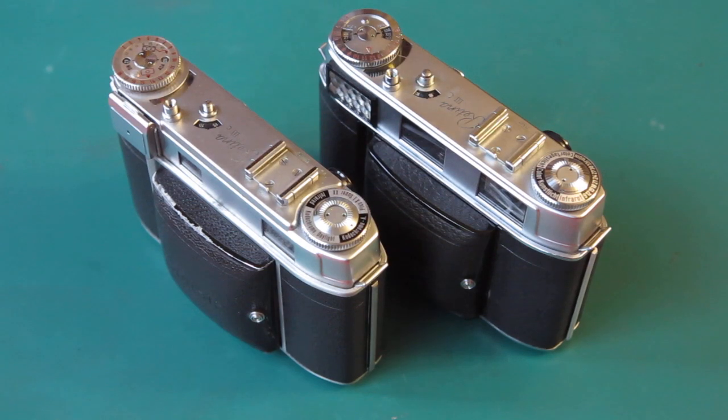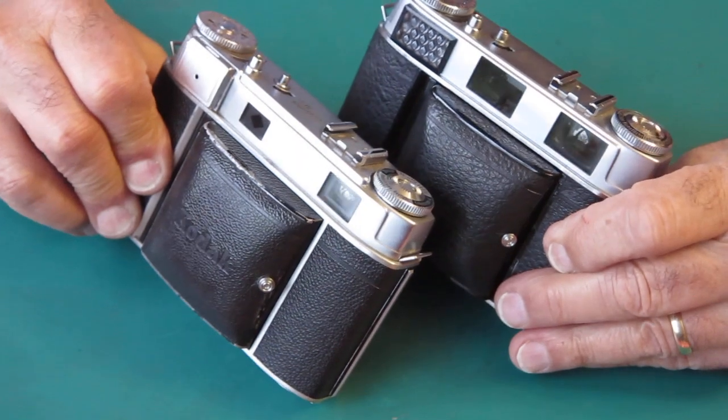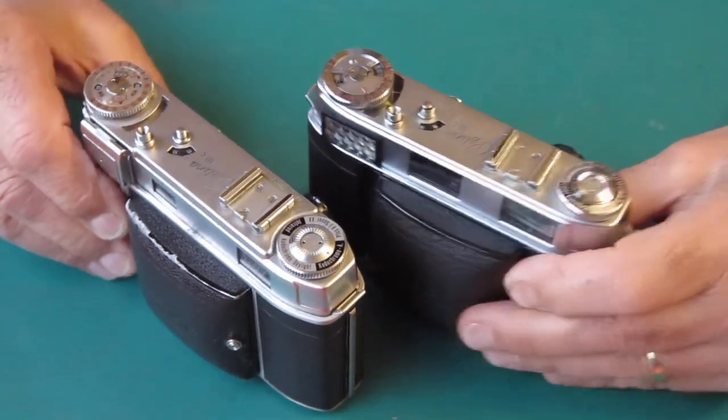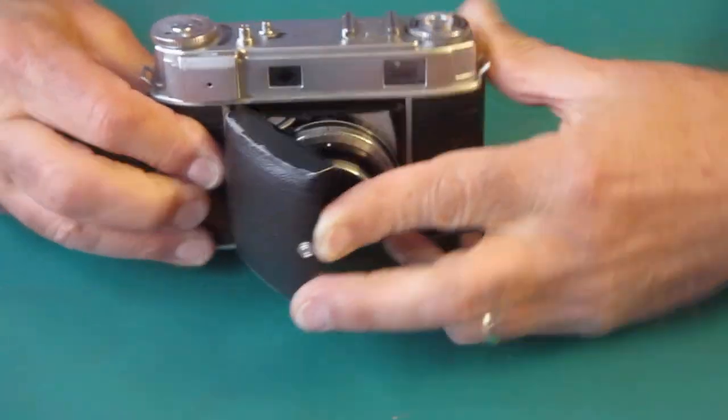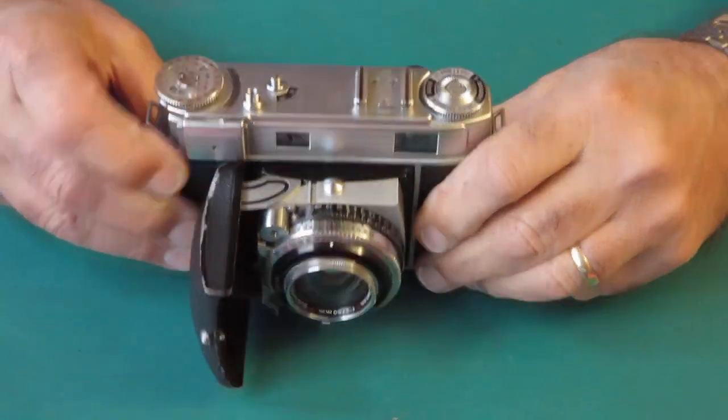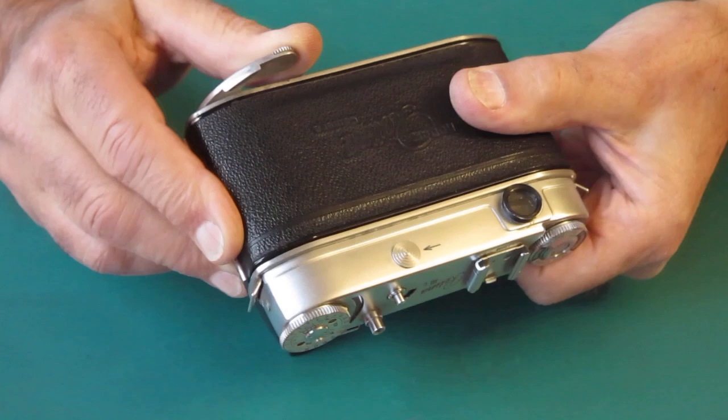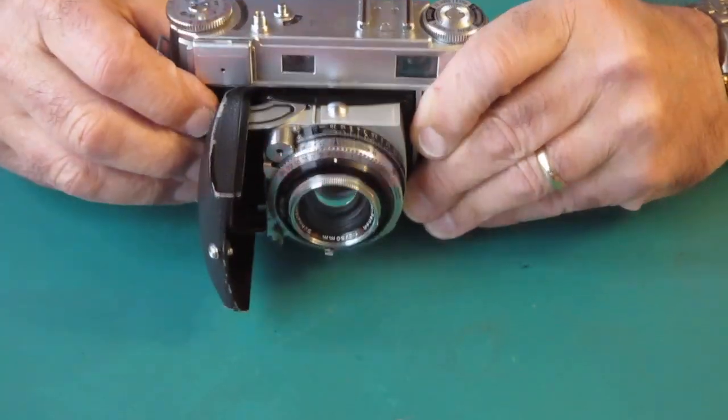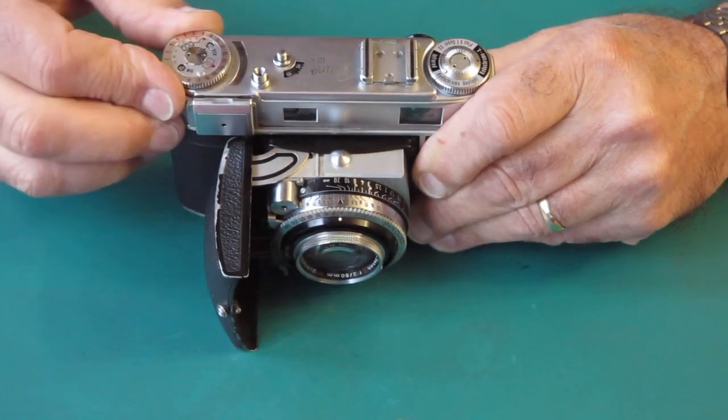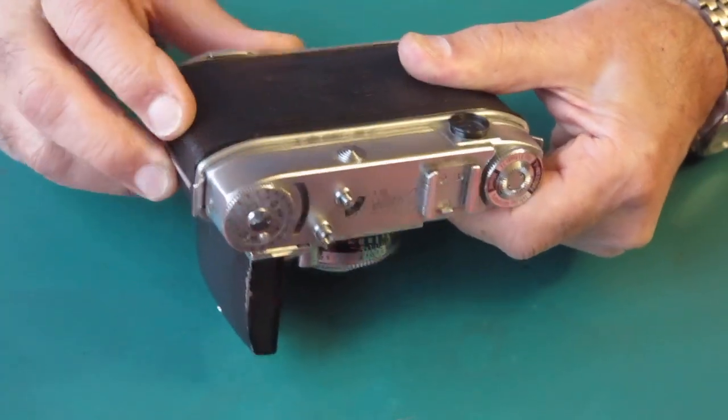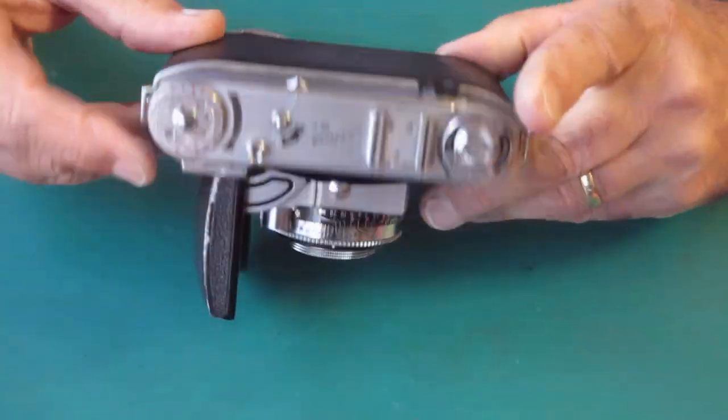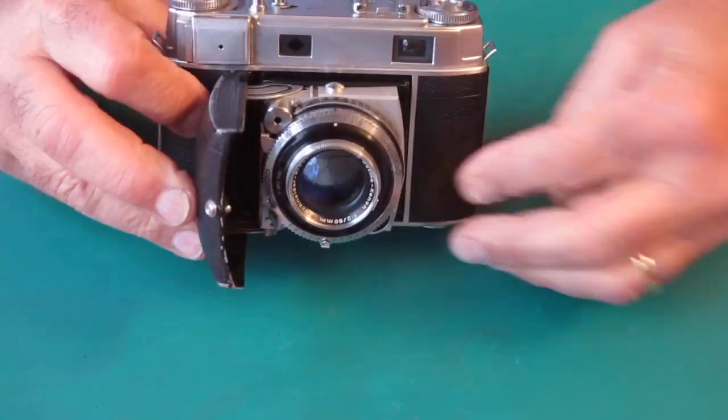Two cameras here from Barcelona, different models, small C and big C, similar problems. Start with this one. Film advance lever won't move. Press the film release button, check that the frame count is not on number one. Absolutely no action, swings this far and no further. Something is seriously wrong.